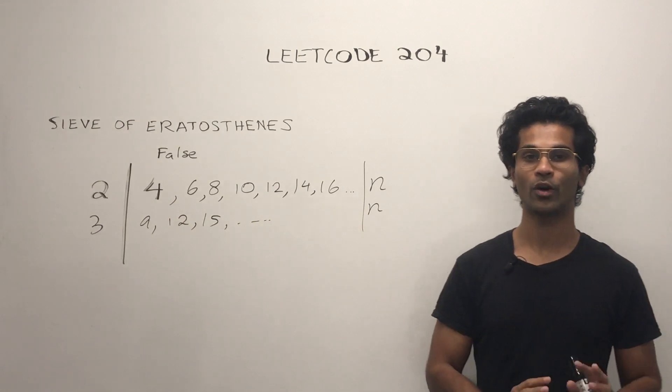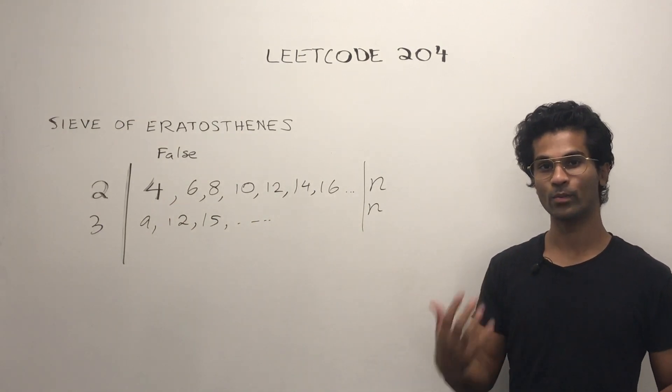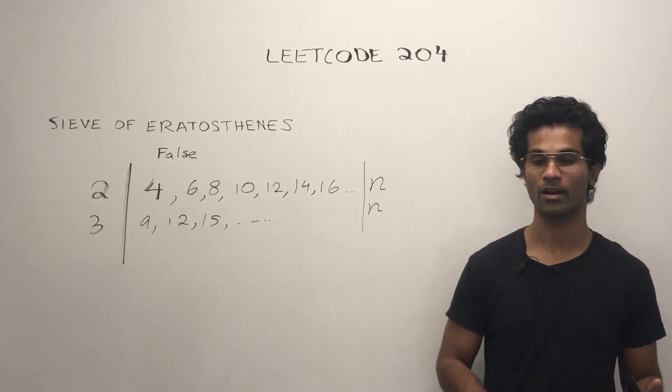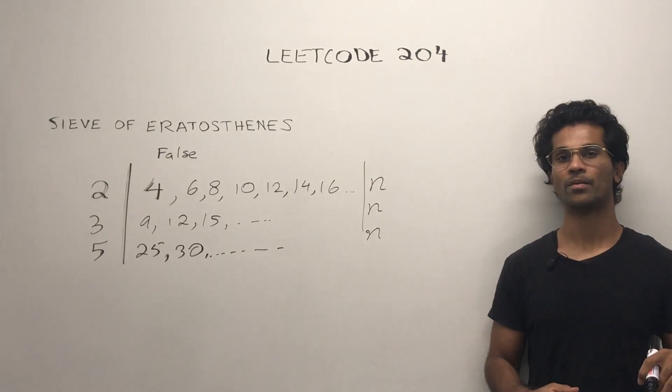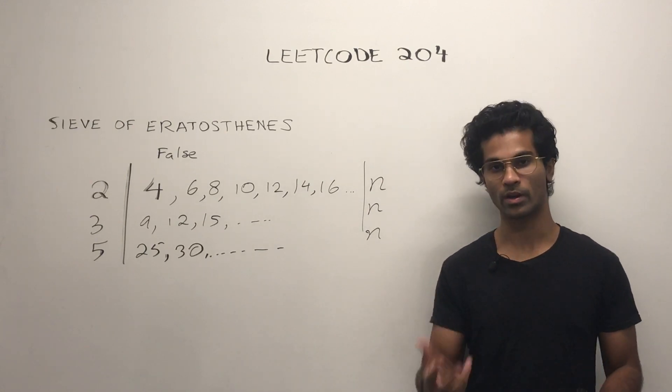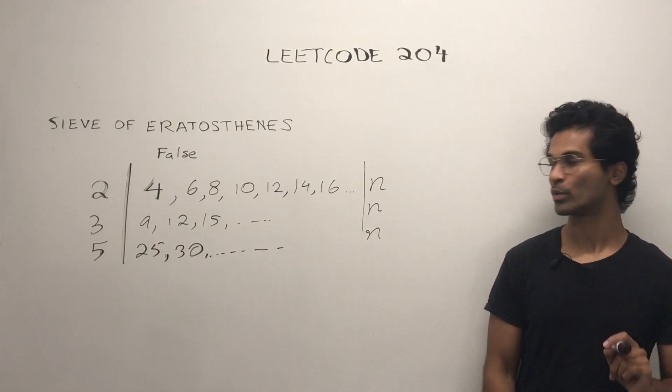So we figured out how we're going to eliminate numbers using the squares. But how many numbers should we keep checking?